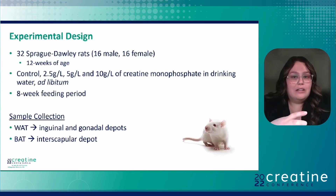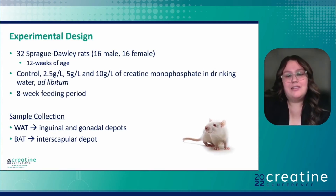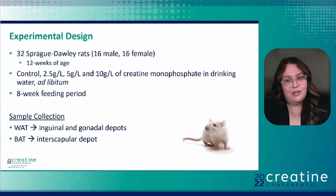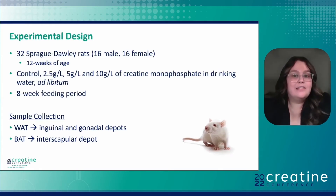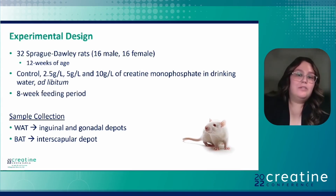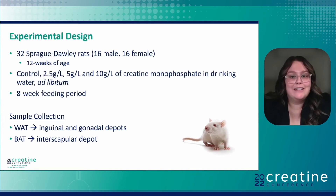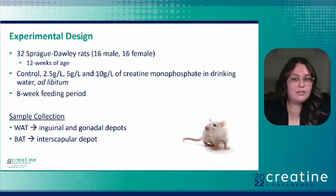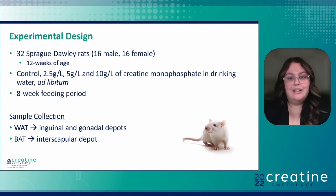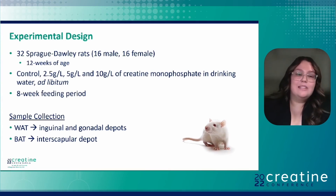To examine our research question, we had 32 Sprague-Dawley rats: 16 were male, 16 were female, and at the beginning of the study they were 12 weeks of age. We divided them into four groups: a control group, and groups with access to 2.5 grams, 5 grams, and 10 grams of creatine per liter in drinking water, which the rats had access to ad libitum for eight weeks. At the end of the feeding period, white adipose samples were collected from the inguinal depot, representative of a subcutaneous adipose depot; from the gonadal depot, representative of a visceral adipose depot; and our brown sample was collected from the interscapular depot. Samples underwent protein quantification as well as histological analysis.